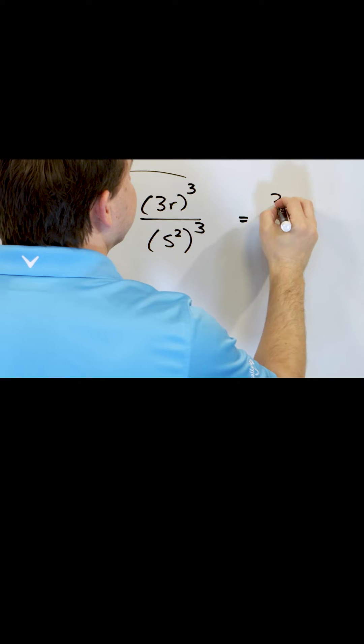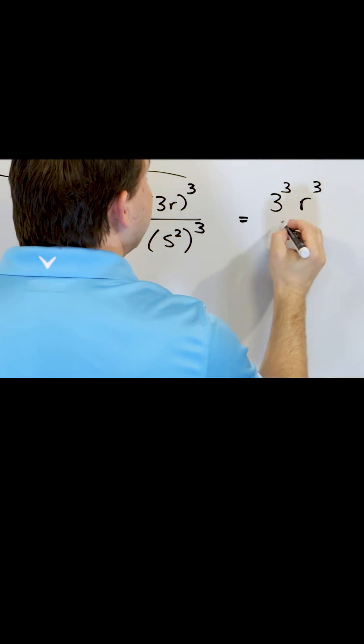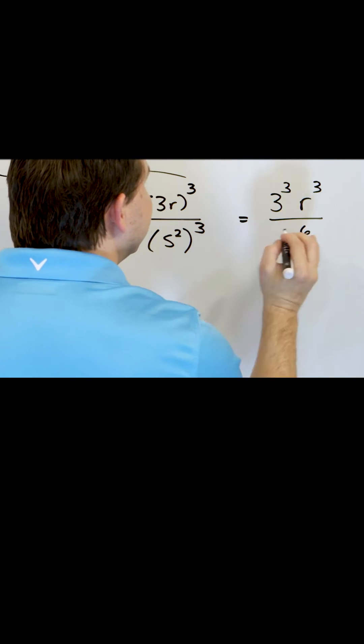So right now, the 3 would get applied to the 3, making it 3 cubed. The r would get that exponent applied as well. But on the bottom, it's an exponent raised to an exponent. So it's 2 times 3 is 6.